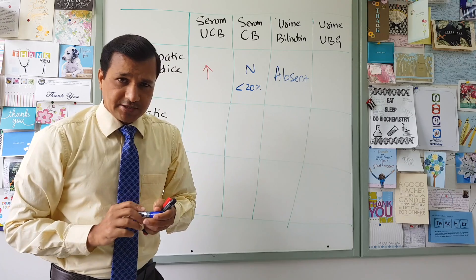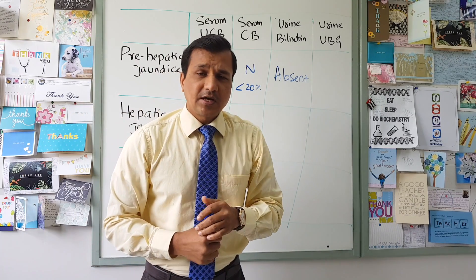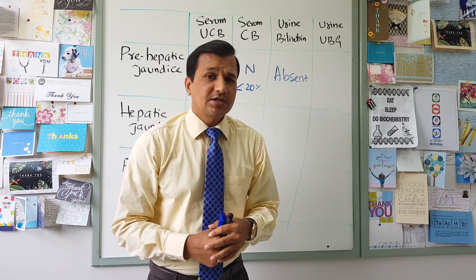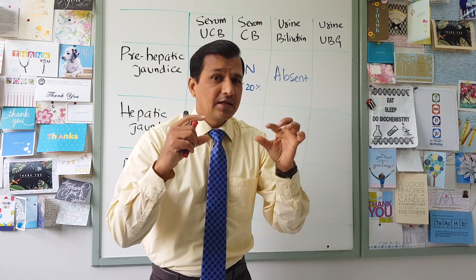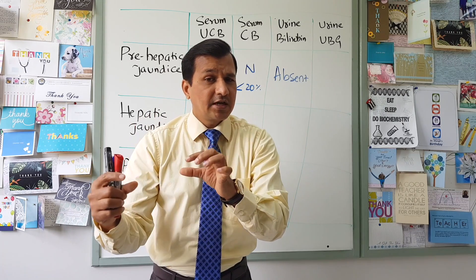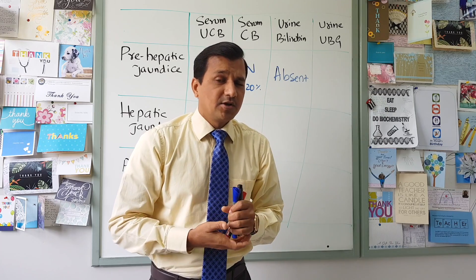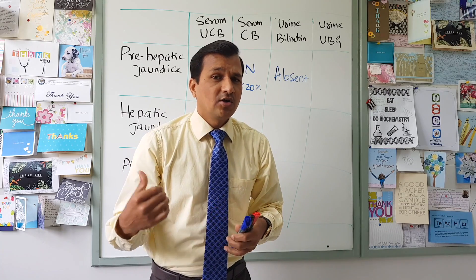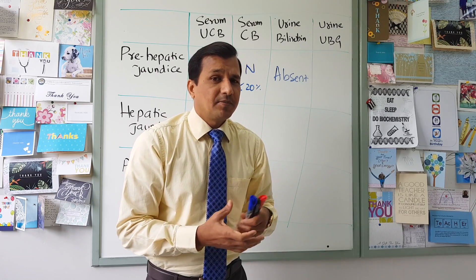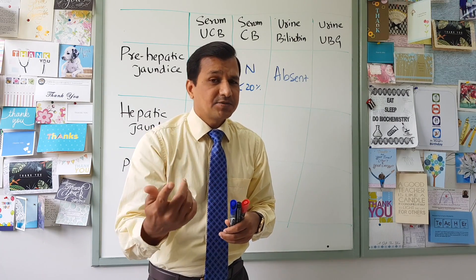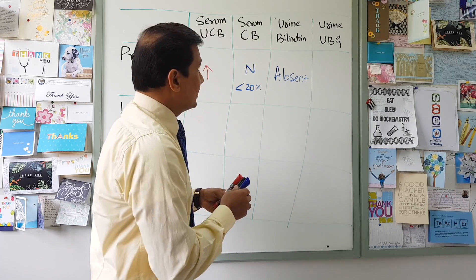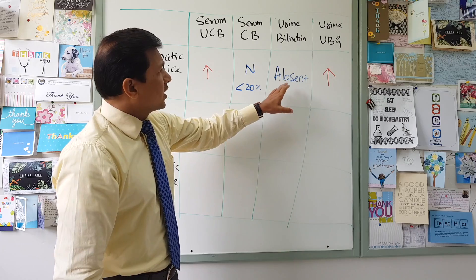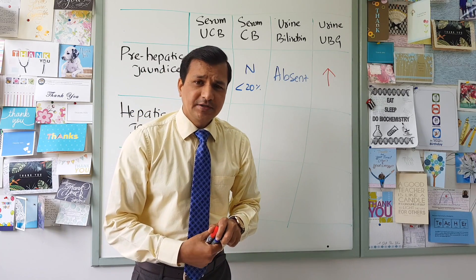As for urine urobilinogen: too much unconjugated bilirubin is coming to the liver, so the liver is conjugating it at maximum pace. This means a large amount of conjugated bilirubin enters the bile duct — not the serum — and then passes into the intestine. In the intestine, this conjugated bilirubin is converted to urobilinogen. About 80 to 90% of urobilinogen goes out in the feces, and 10 to 20% is reabsorbed into enterohepatic circulation, with some escaping into the urine. So there is an increase in urine urobilinogen in pre-hepatic jaundice, and also an increase in fecal urobilinogen.